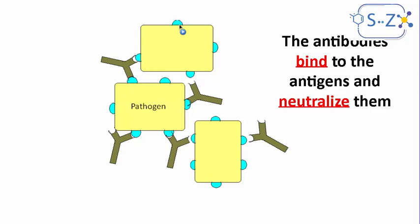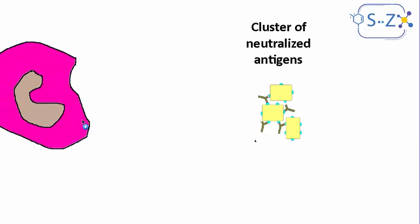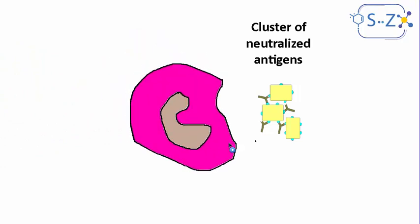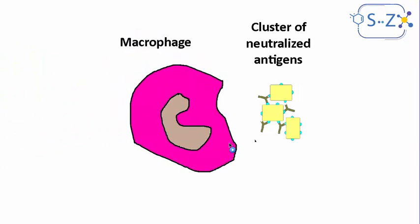Now, one of the scenarios or one of the possible fates of the antigen in the body is that we have a cluster of neutralized antigens that are now powerless. Sometimes the macrophage or the phagocyte will be here at the site and will easily now phagocytose this cluster of antigens.